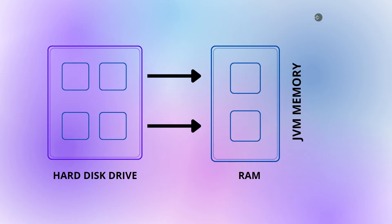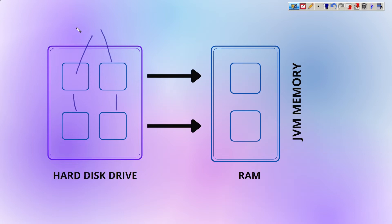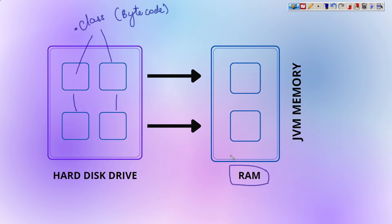So this is how the .class file gets loaded. These may be multiple .class files which are there in bytecode format. Bytecode means the zeros and ones format which the compiler generates. So those .class files are loaded in your JVM memory, which is there in the RAM of our device.